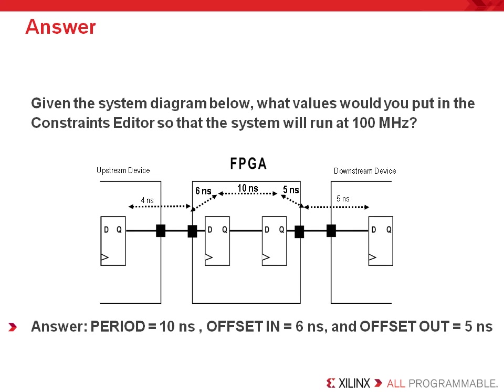Because you want the entire system to run at 100 MHz — that is, with a 10 nanosecond period — delays from one synchronous element to another must be no more than 10 nanoseconds. Therefore, the period constraint must be 10 nanoseconds. For the offset in, the delay through the upstream device plus trace delay is 4 nanoseconds, so the delay within the FPGA can be no more than 10 minus 4 nanoseconds, giving an offset in constraint of 6 nanoseconds. A similar calculation for the offset out gives 10 minus 5 nanoseconds, which is 5 nanoseconds. So the answers are: period of 10 nanoseconds, offset in of 6 nanoseconds, and offset out of 5 nanoseconds.